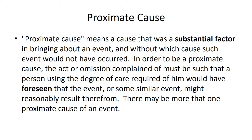The other element of proximate cause is foreseeability. The person who commits the negligence has to be able to foresee that their negligence may result in the injury that occurs. For example, a chiropractor who chooses not to x-ray patients — it should be foreseeable that they may perform adjustments when the patient has previous fractures, or may cause injuries as a result. On the other hand, if there are too many links in the chain before the patient suffers an injury, it may not be foreseeable.